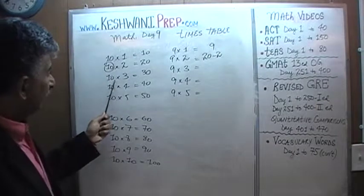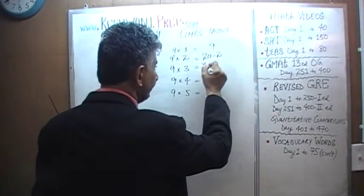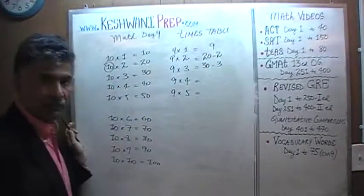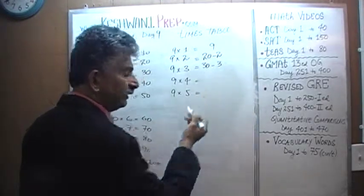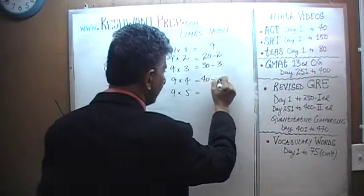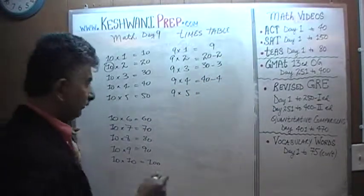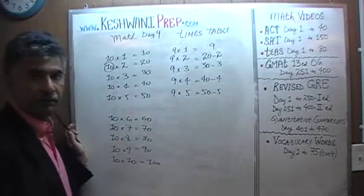Same thing here. We know ten threes are thirty. We need nine threes. So, we know ten threes are thirty. We just take away three. Take away one three. Because thirty represents ten three. Ten three minus one three is going to give you your nine threes. Nine fours, well, ten fours are forty. Take away one four. We know ten fives are fifty. We take away one five. And there is your answer.